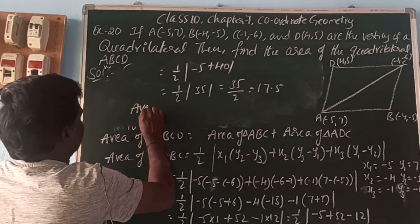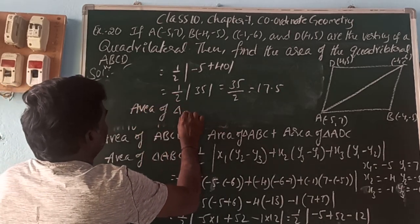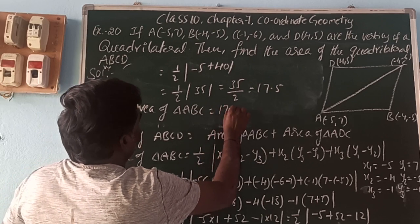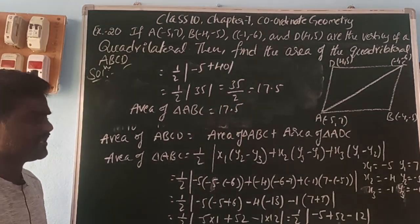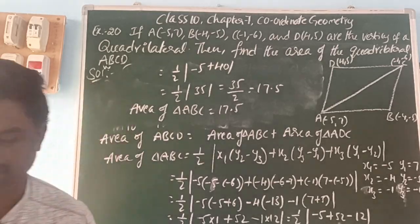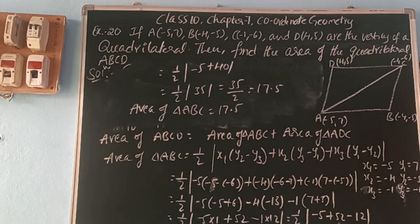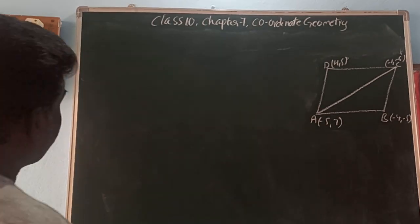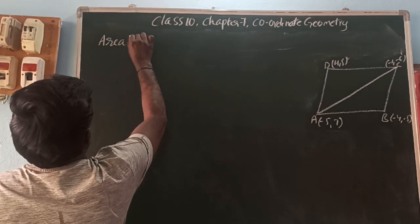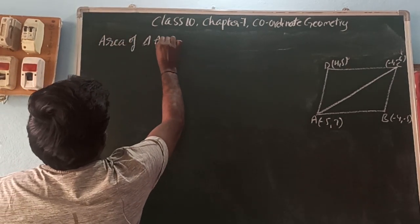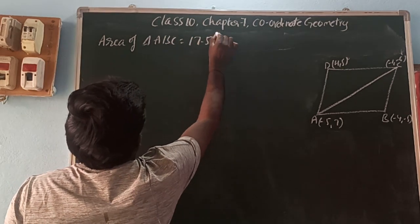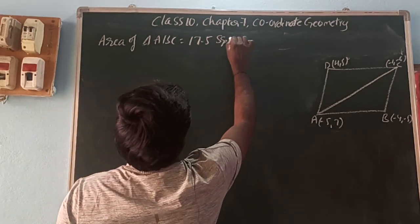Area of triangle ABC = 17.5 square units.